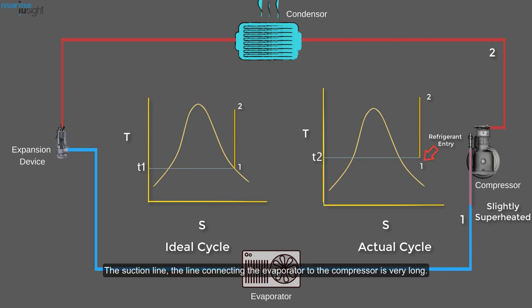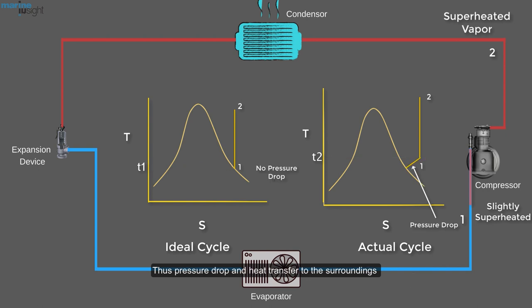The suction line, the line connecting the evaporator to the compressor, is very long. Thus, pressure drops and heat transfer to the surroundings can be significant. Process 6-1.